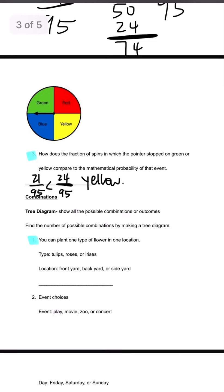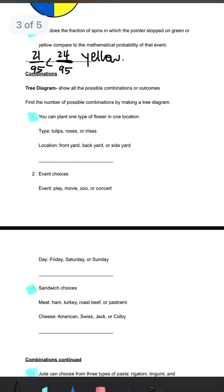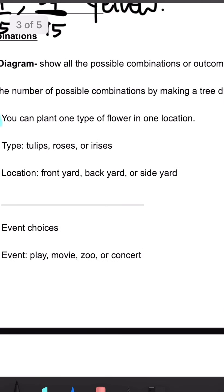Finally, we're going to be looking at combinations. It says tree diagram shows all the possible combinations or outcomes. Find the number of possible combinations by making a tree diagram. I don't like making tree diagrams because I think they're a lot more complicated. So I just multiply things out. Let's take a look at number one. You can plant one type of flower in one location. There's three different types of flowers, tulips, roses, or irises. There's front yard, backyard, or side yard. So three different locations. So we're just going to multiply three times three times one and we get nine combinations.